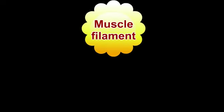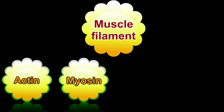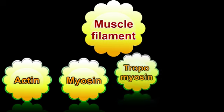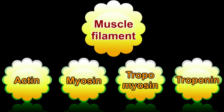A muscle filament consists of actin, myosin, tropomyosin and troponin.